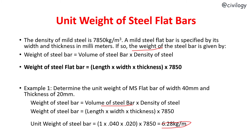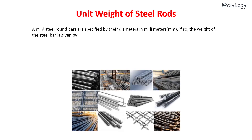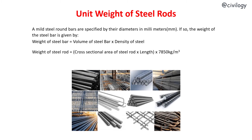Now we'll discuss the unit weight of steel rods, which are circular in shape. Mild steel round bars are specified by their diameters in millimeters. The weight of the steel bar is given by: Weight = Volume × Density. For a circular bar, the volume is the cross-sectional area multiplied by length, and the density of steel is 7,850 kg per meter cube.